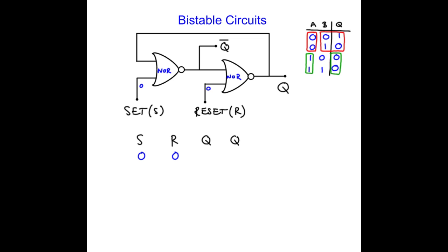So set is 0, reset is 0. Let's just assume that q is 1. So q is logic 1. The 1 gets fed back around, so this becomes logic 1. 1 and 0 into my NOR gate give me 0, so q bar is 0. And now carrying on, a 0 and a 0 into this NOR gate give me logic 1. So everybody's happy. This one works. It's okay for q to be 1.